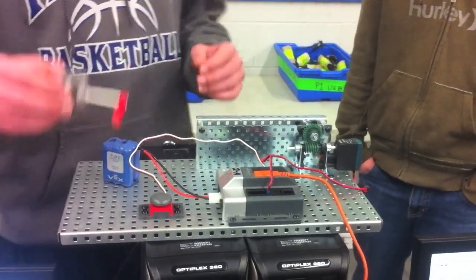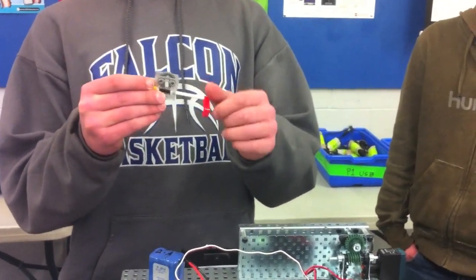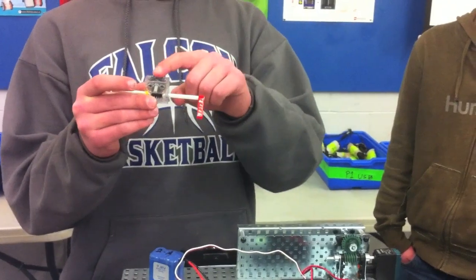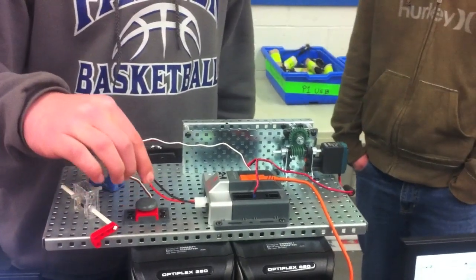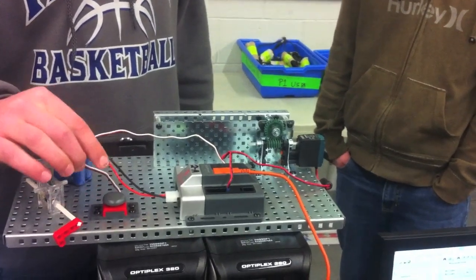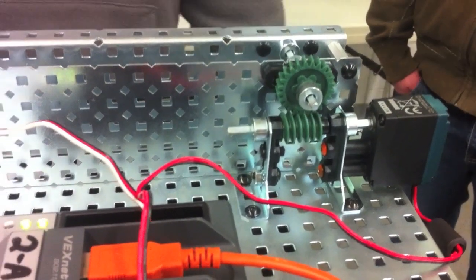And this is our Lego piece. As you can see, the worm drives the wheel. So this can only turn this, but this cannot turn this. And we programmed our mechanism to go forward, to stop, and go backwards. And that is our mechanism.